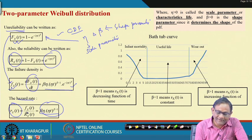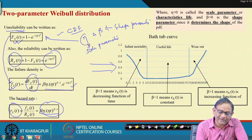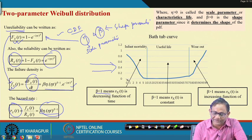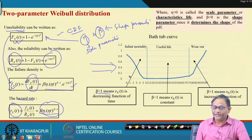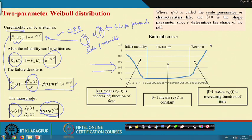Suppose you have computed eta and beta, and your beta value is less than 1 — this means the infant mortality region, where the hazard rate is a decreasing function of time. If beta equals 1, this describes the useful life phase with constant hazard rate. When beta is greater than 1, it is the wear-out or burn-out phase. So knowing the beta value tells you which phase the component is operating in.